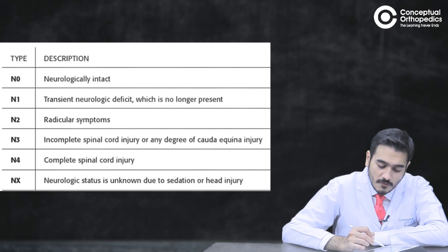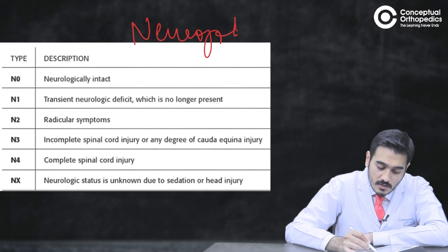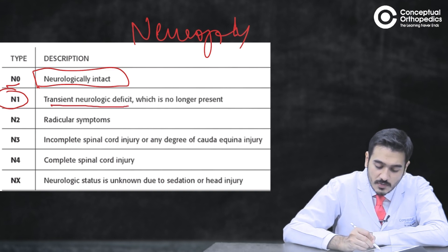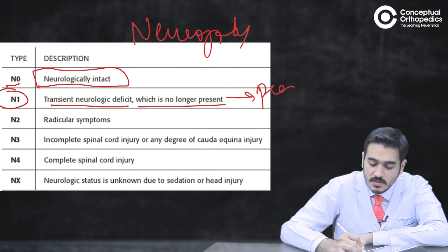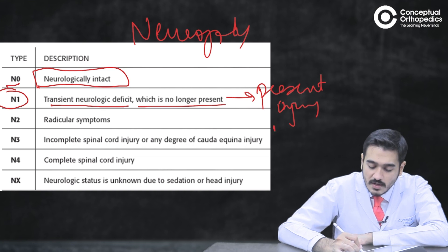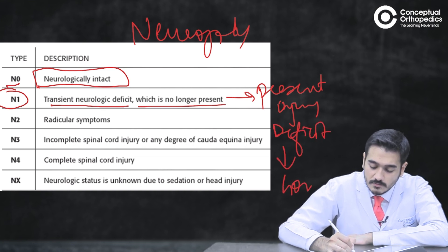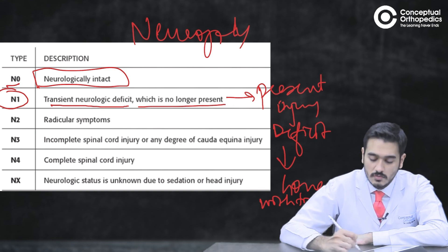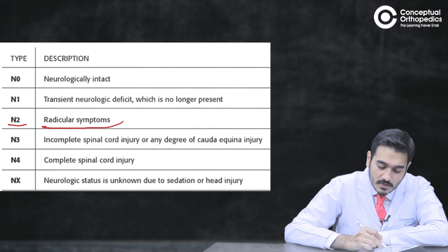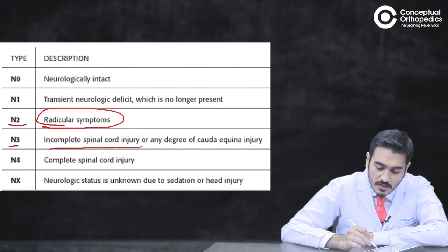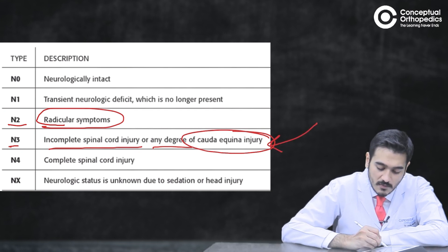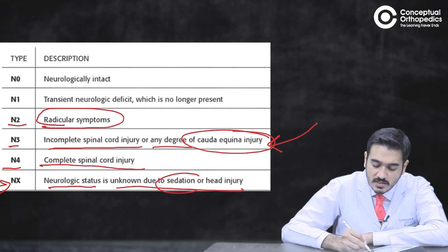They also focused on neurology. N0 is a completely neurologically intact patient. N1 is a transient neurological deficit which may no longer be present — meaning immediately after the injury there was a deficit that resolved over hours or a day. N2 is denoted by radicular symptoms. N3 is incomplete spinal cord injury or any degree of cauda equina injury. N4 is complete spinal cord injury. Nx is a neurological status that cannot be determined due to sedation or head injury.